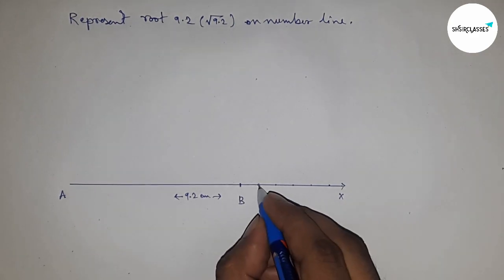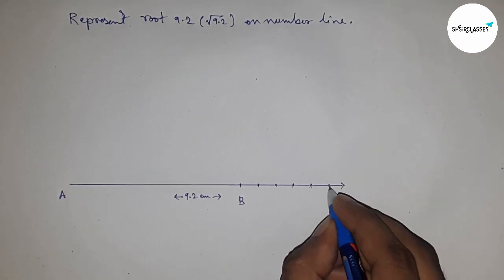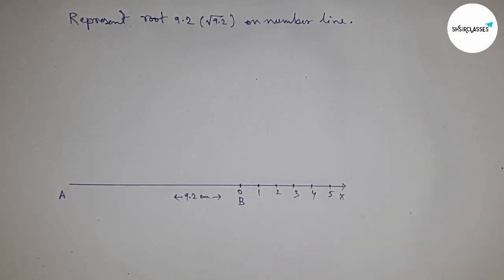Four, five, and so on. So this is 0, 1, 2, 3, 4, 5. This is point C.